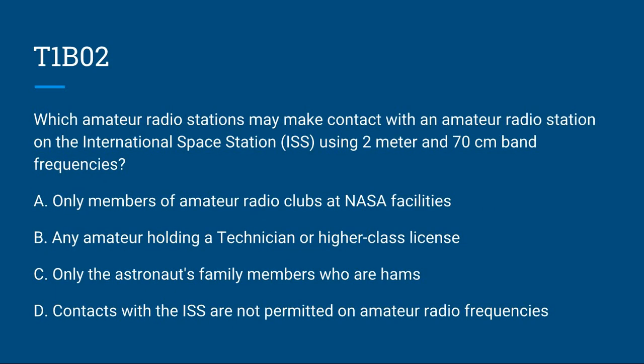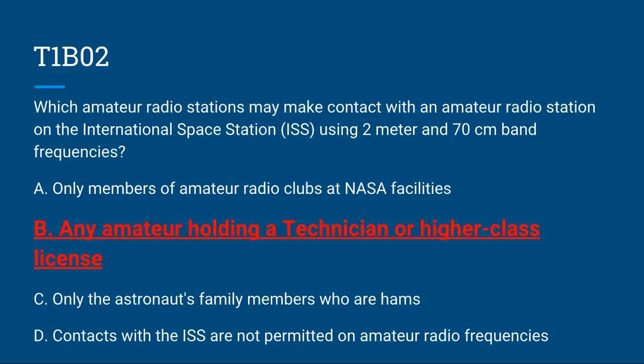T1B02: Which amateur radio stations may make contact with an amateur radio station on the International Space Station using 2 meter and 70 centimeter band frequencies? The correct answer is B, any amateur holding a Technician or higher class license.